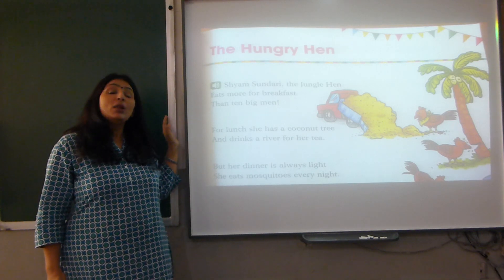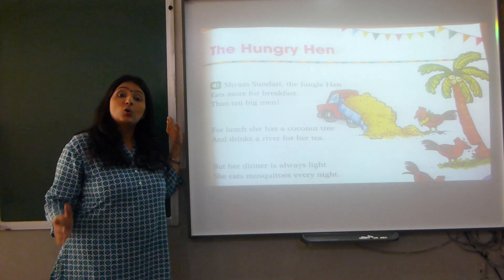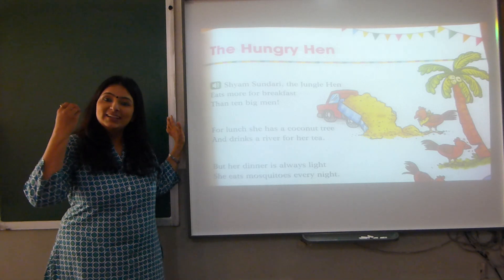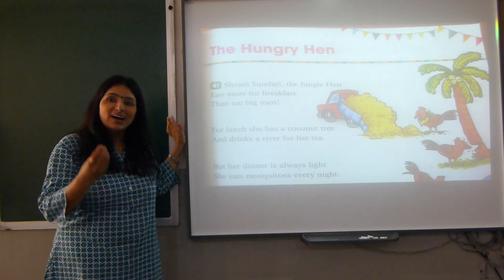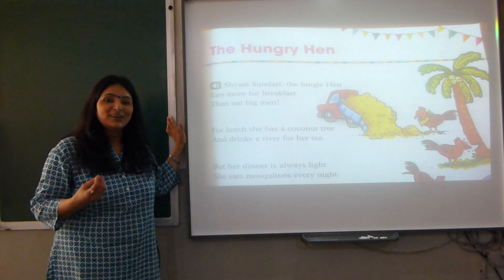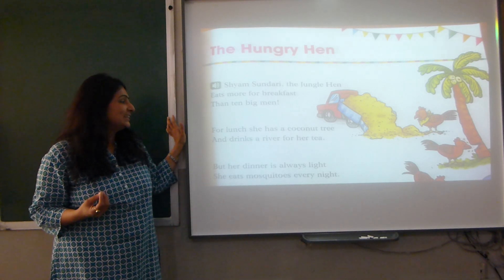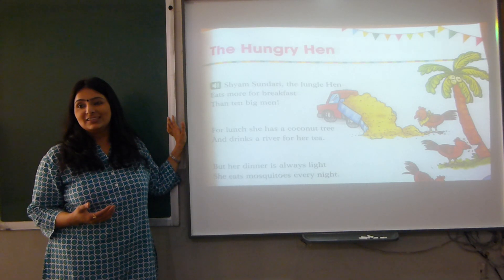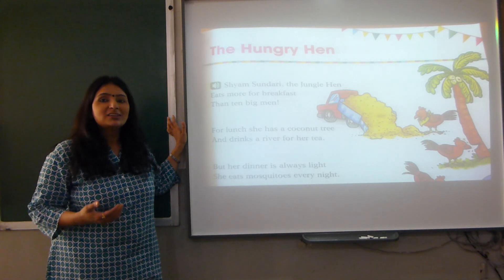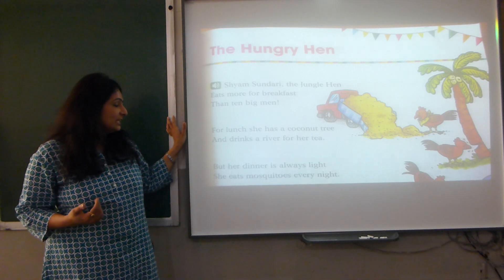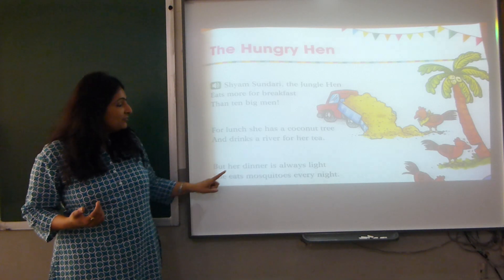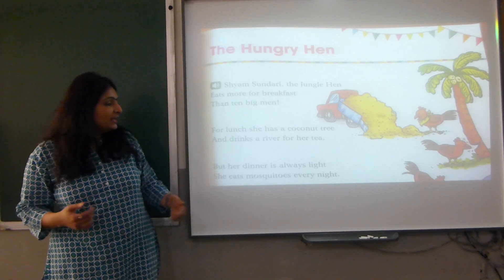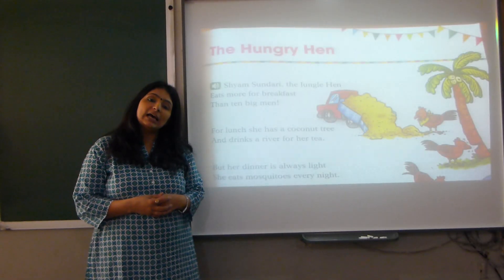And they say that for lunch she has a coconut tree. Can a hen eat the entire coconut tree? Not possible. And she drinks a river for her tea. She cannot drink a river for her tea. But for her dinner it is always light — she eats mosquitoes every night.